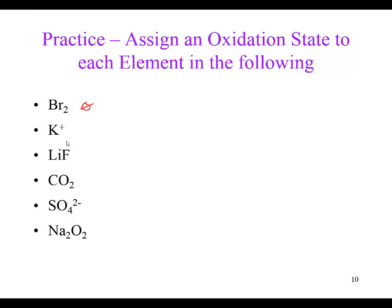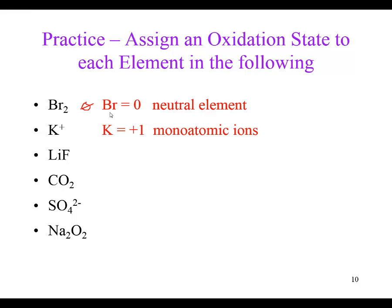If I have a monoatomic cation, we would predict the oxidation number was a plus one. Bromine as a neutral element is zero. The potassium monoatomic ion we predict to be a plus one - whenever there's a monoatomic ion, the charge is the same as the oxidation number.